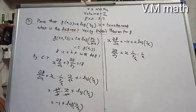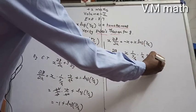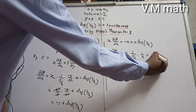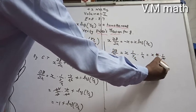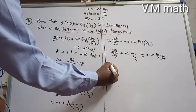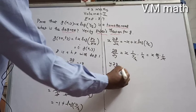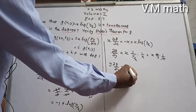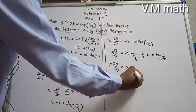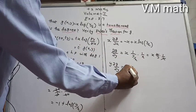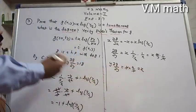Now computing ∂g/∂y: differentiating x·log(y/x) with respect to y. This gives x·(1/y)·(1/x)·x, which simplifies to 1 divided by x, then reciprocal. After y cancels, ∂g/∂y = x/y. Therefore y·∂g/∂y = x.